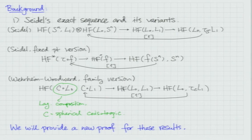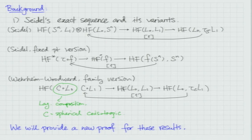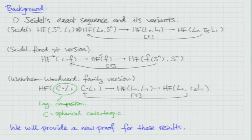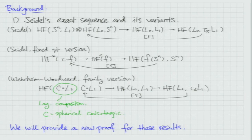We also have a family version of Dehn twist exact sequence due to Wehrheim-Woodward. In this case, we consider the spherical coisotropic submanifolds C. You can form a Lagrangian composition when you consider this coisotropic submanifold as a Lagrangian correspondence, giving a Floer homology exact sequence. Today we will provide a new proof of all these results.